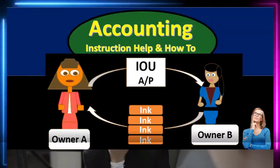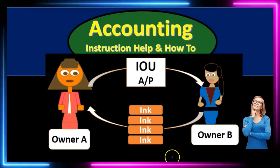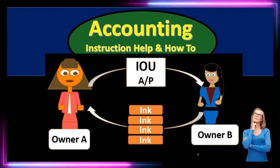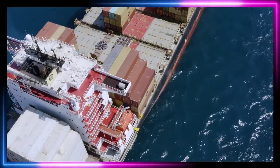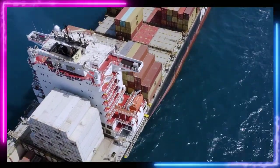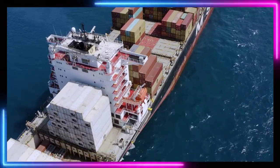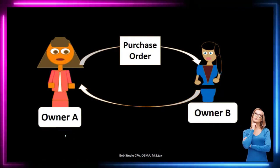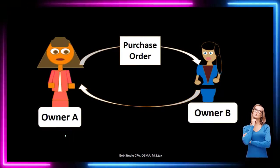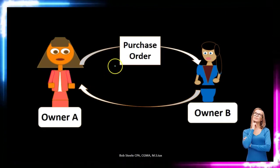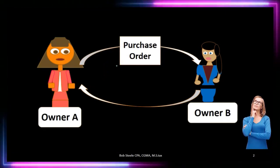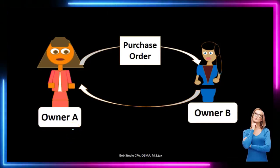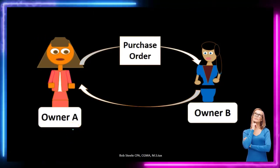In our example, Owner A will be the purchaser of the inventory and Owner B will be the seller. We'll imagine the inventory is being shipped overseas, so Owner B is going to have to ship the inventory overseas to Owner A. To initiate this process it starts with a purchase order — Owner A realizes they have a shortage of computer ink and sends a purchase order to the seller, Owner B. Owner A is buying the computer ink in bulk and will be reselling it.